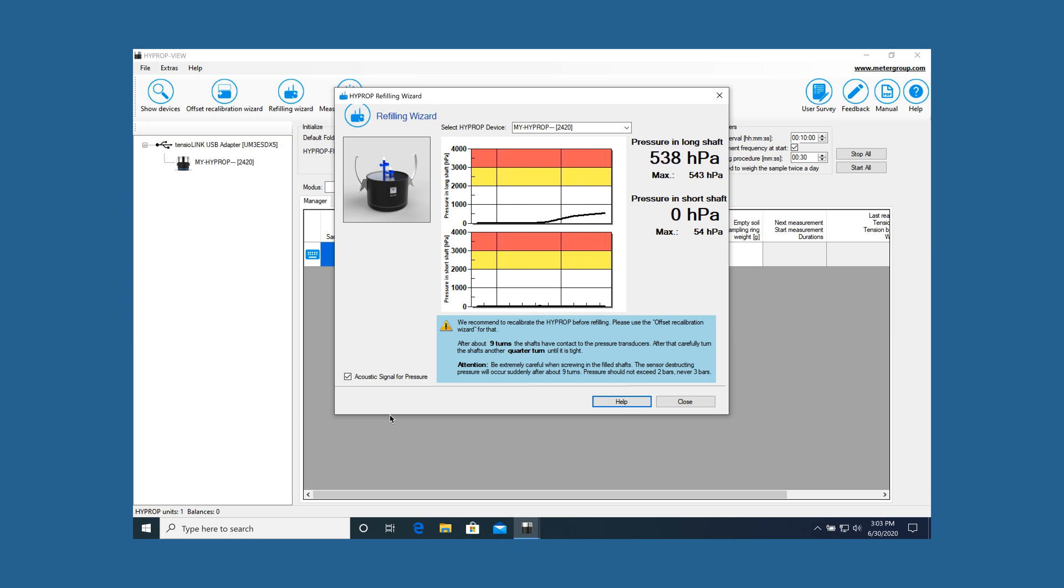If the pressure does not rise to tensions close to atmospheric air pressure, see the manual for troubleshooting. As the pressure has reached the atmospheric air pressure, for example 1000 hectopascals or 100 kilopascals, wet the ceramic immediately with deionized water.